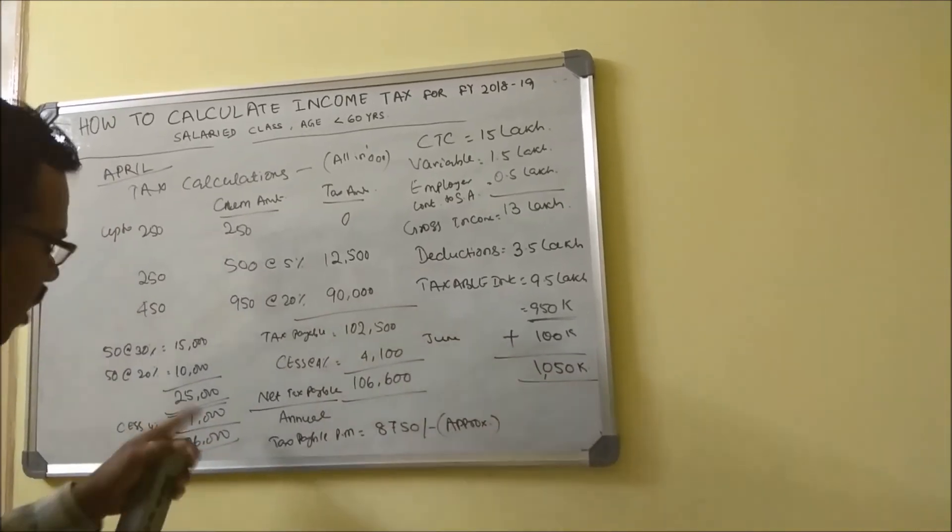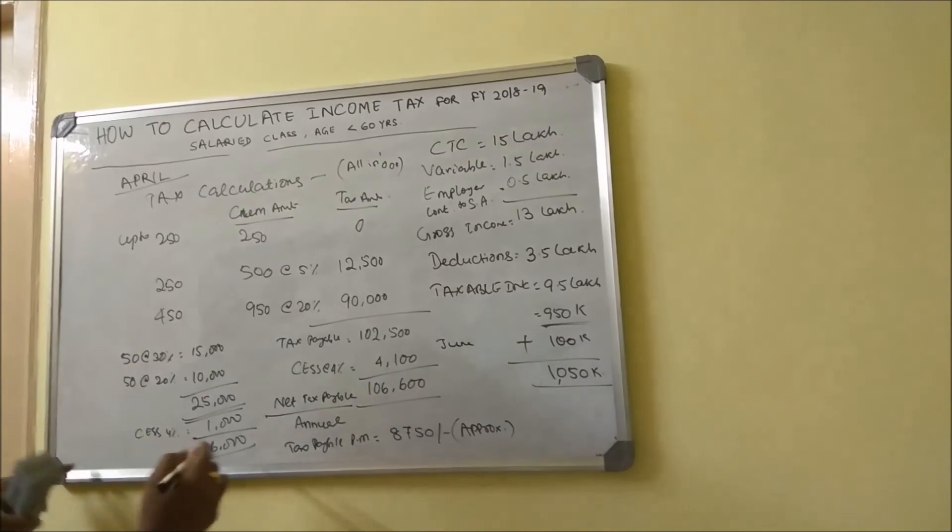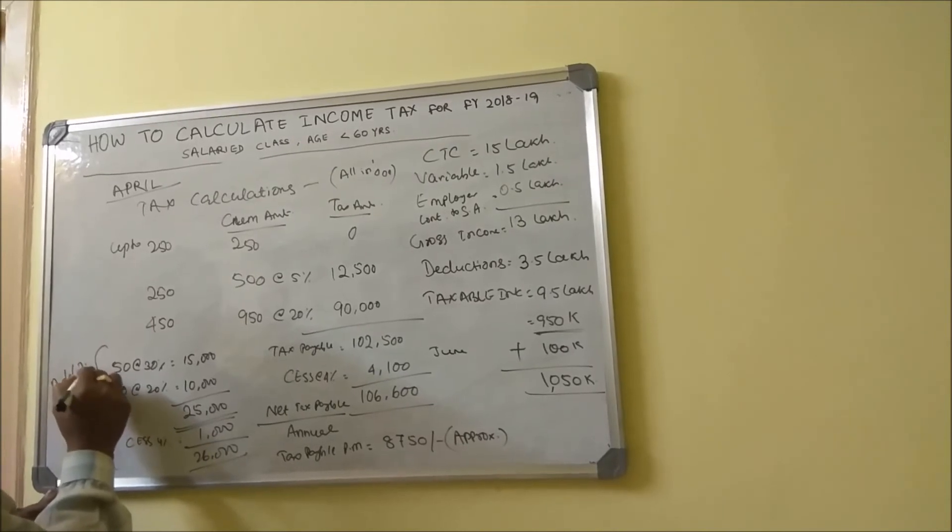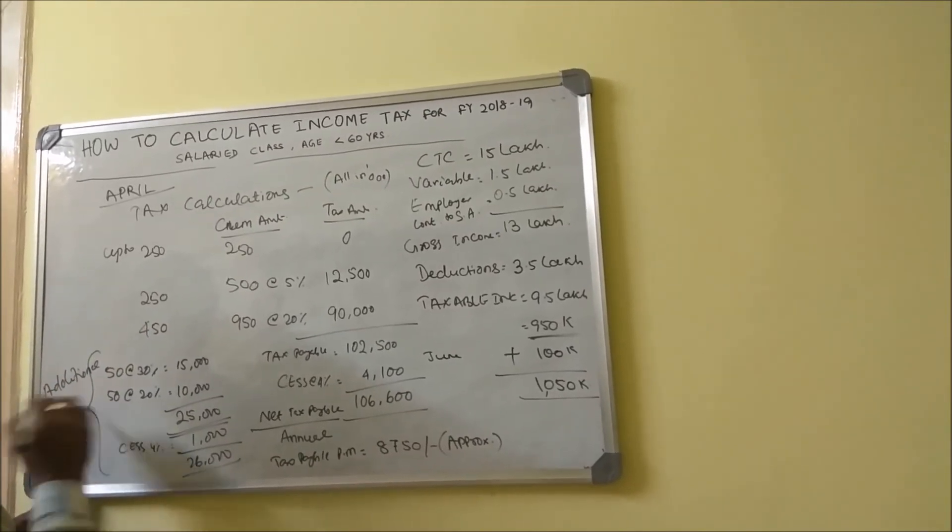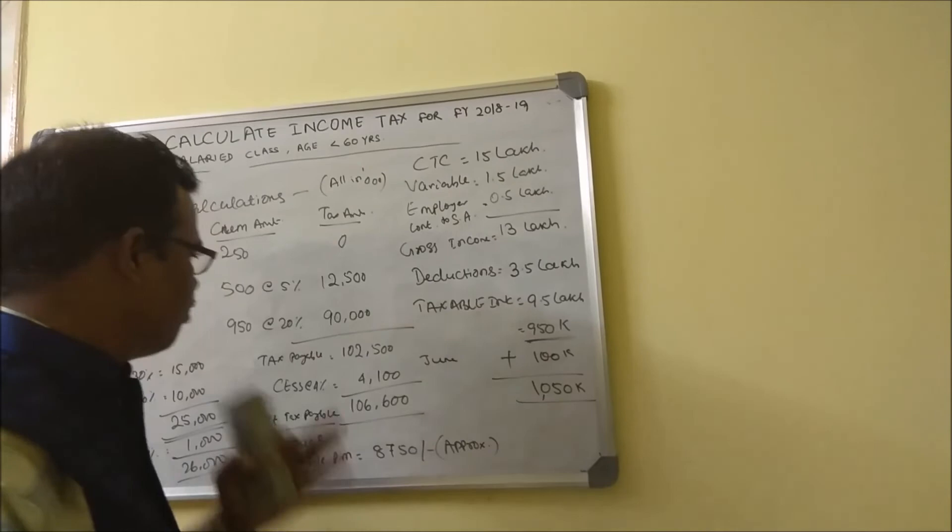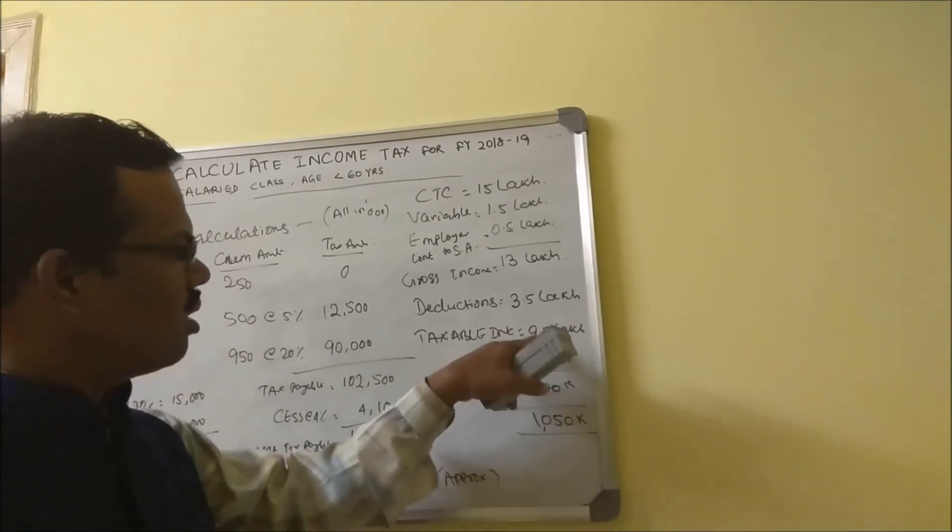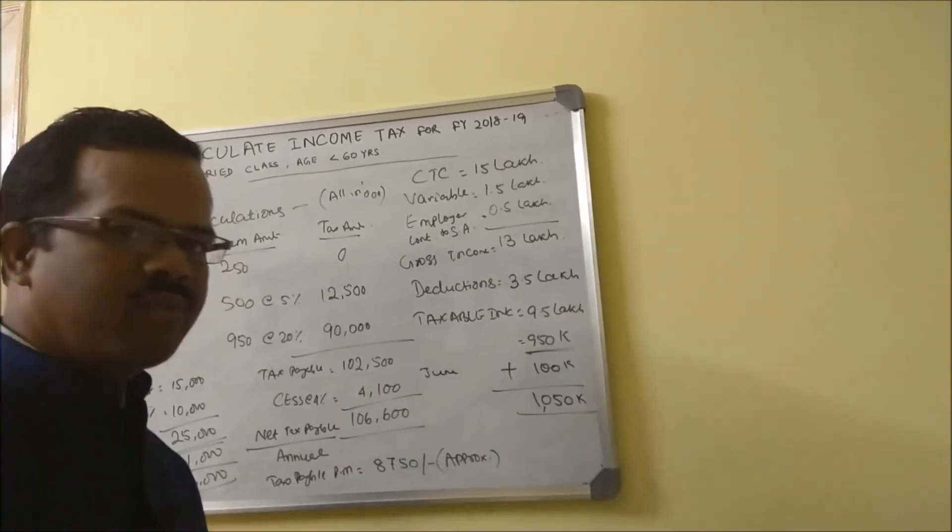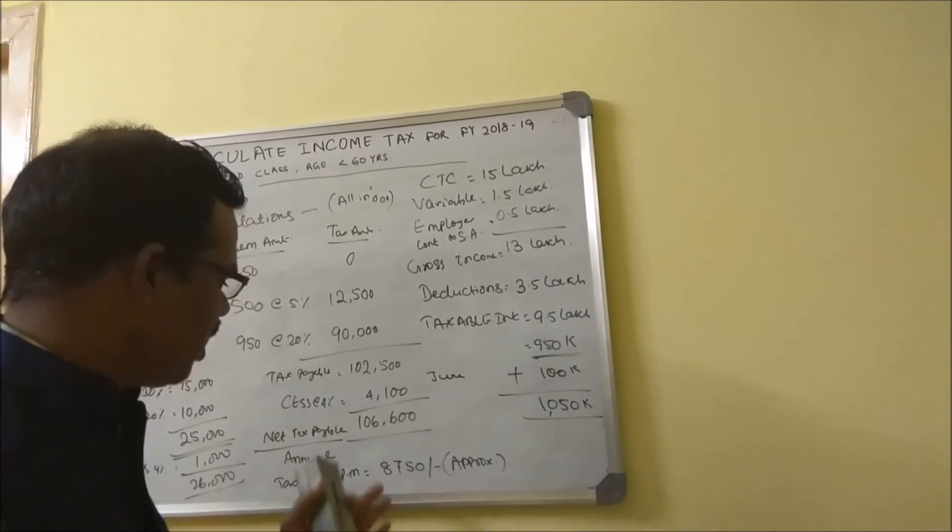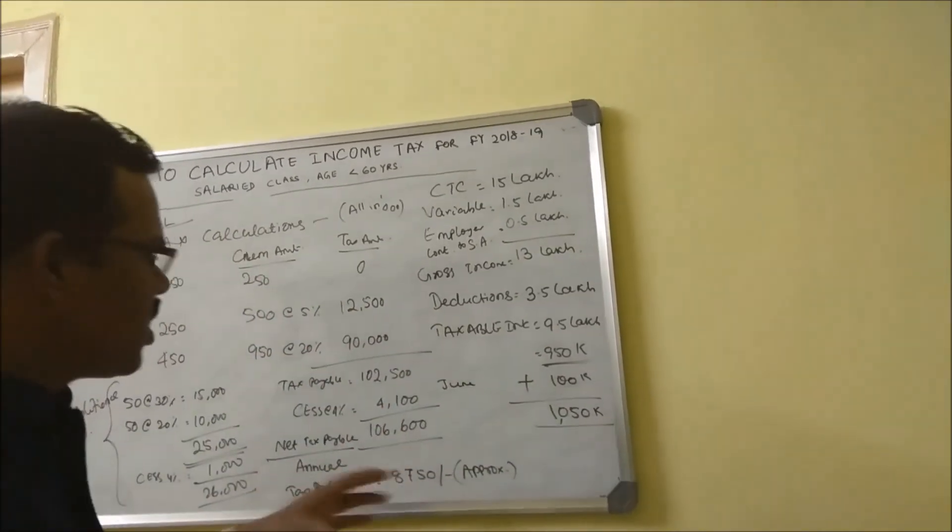This additional tax can be collected in the month of June itself - this entire thing, because you got a bonus. Or it can be collected at only 20 percent because at the time of crediting your variable you are in the 20 percent tax bracket, so only 20 percent can be collected and the remaining can be divided into next nine months. So you may have to pay another 500 rupees extra. This is a typical case study of how the tax gets calculated in your companies.